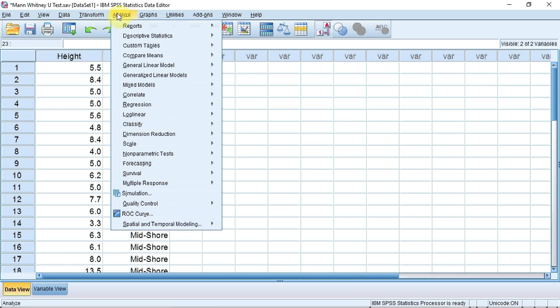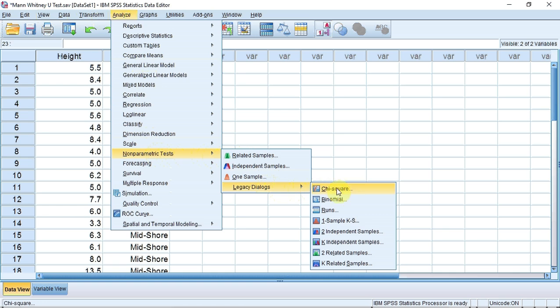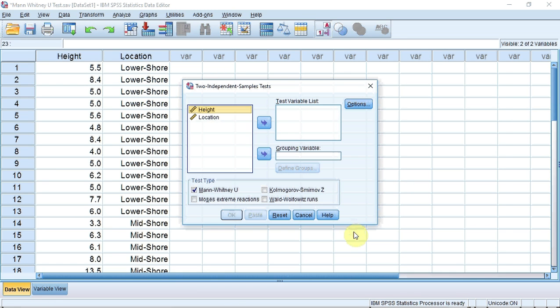We're going to go to analyze, down to non-parametric tests. You can see a submenu opens. I'm going down to legacy dialogues, and then down to independent samples, and click. A box opens.